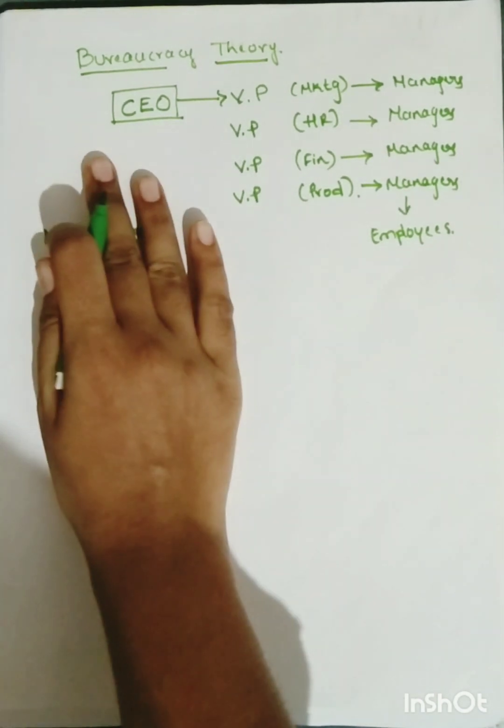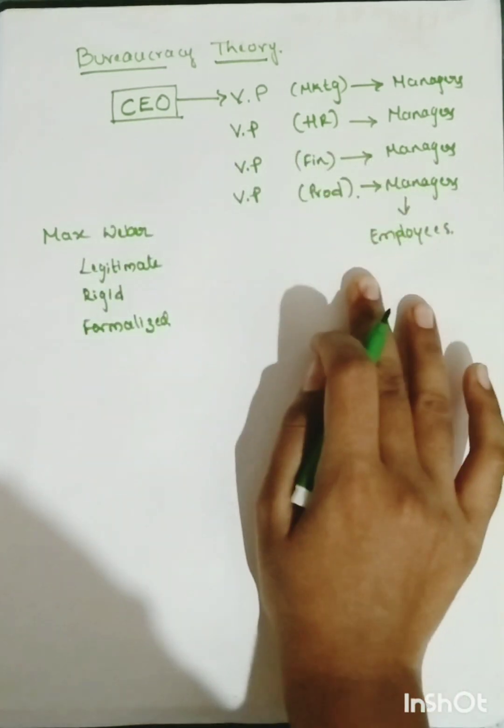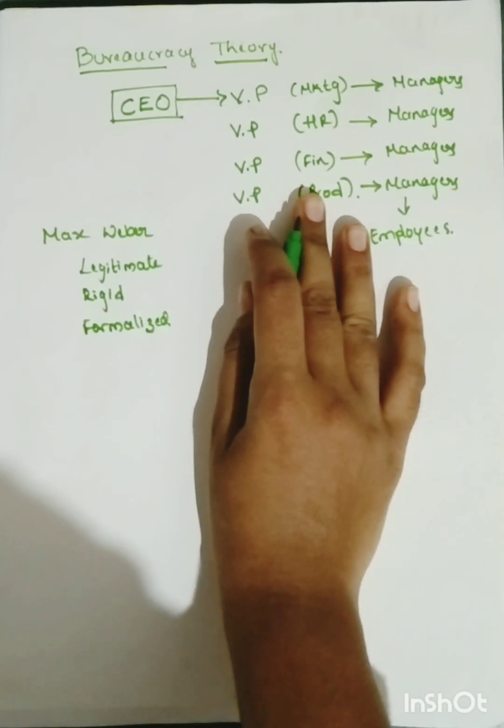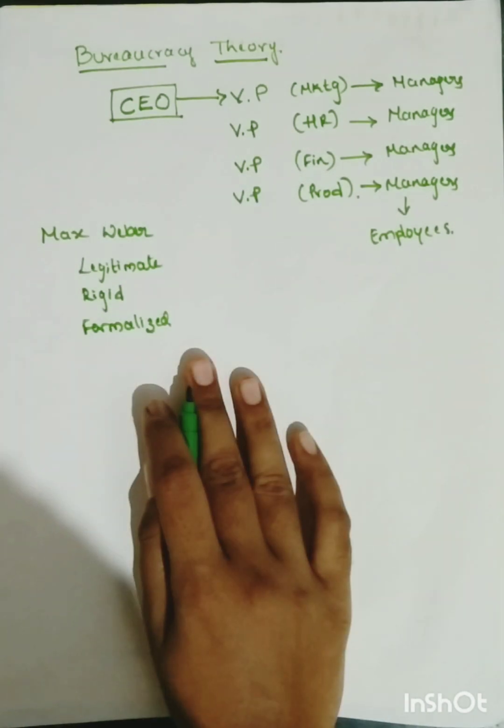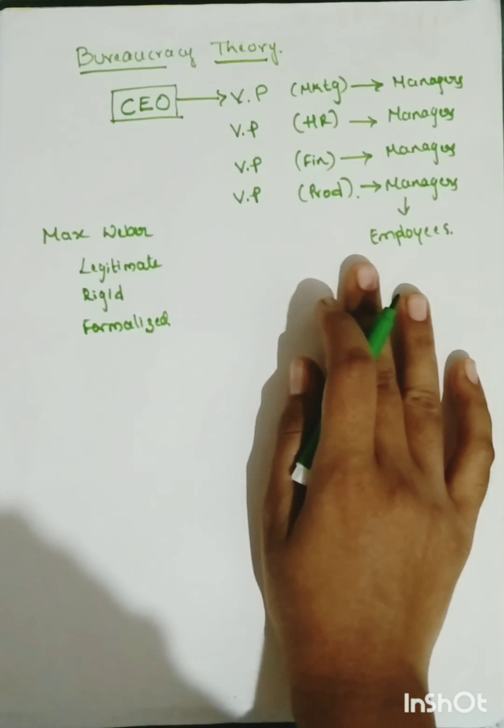Where if one side says something, the procedure is set to follow. Rigid in the sense where flexibility is reduced, where the employee and manager opinions may be reduced. It's formalized, meaning it is a formal hierarchical theory.